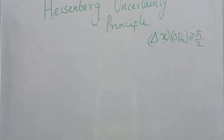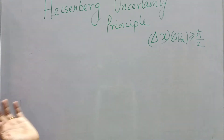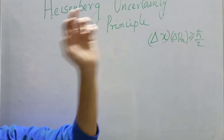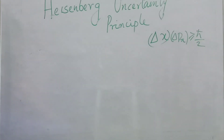We discussed about the canonically conjugate variables and canonically conjugate quantities, and the uncertainty relation: delta x into delta px is greater than or equal to h-cross by 2. This uncertainty principle can also be obtained for other pairs of conjugate variables.